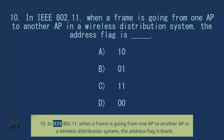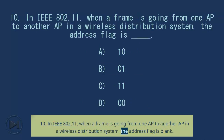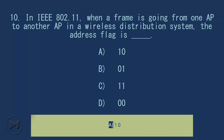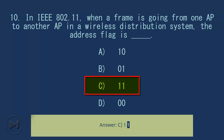Question 10: In IEEE 802.11, when a frame is going from one AP to another AP in a wireless distribution system, the address flag is blank. A. 10, B. 01, C. 11, D. 00. Answer: C. 11.